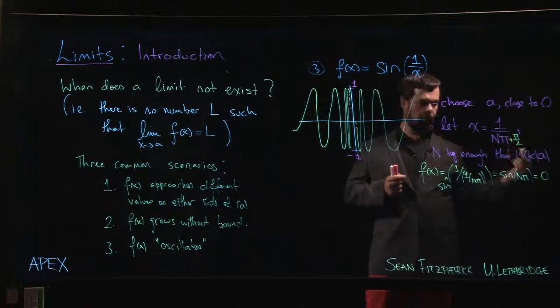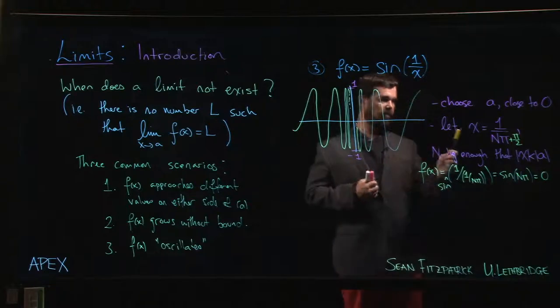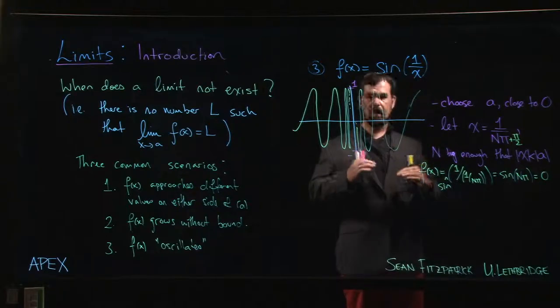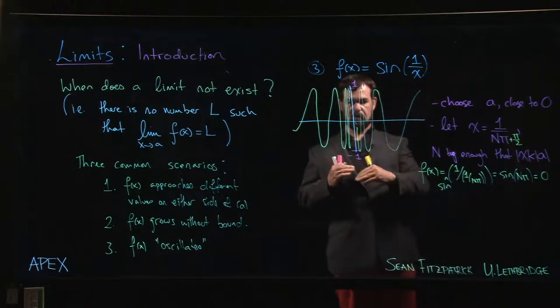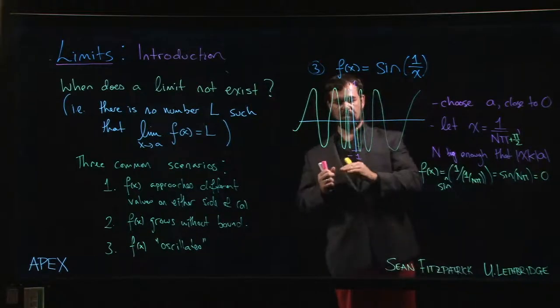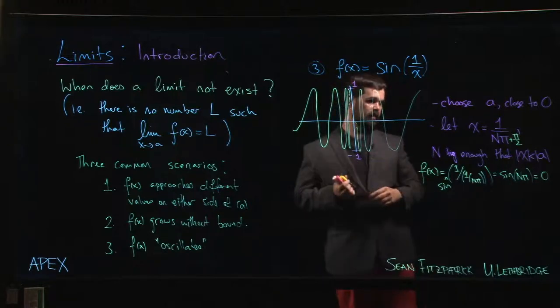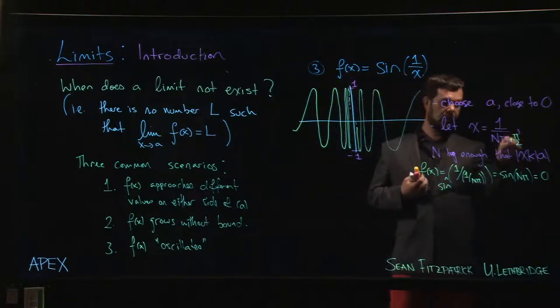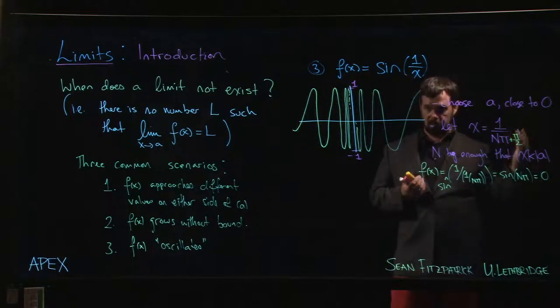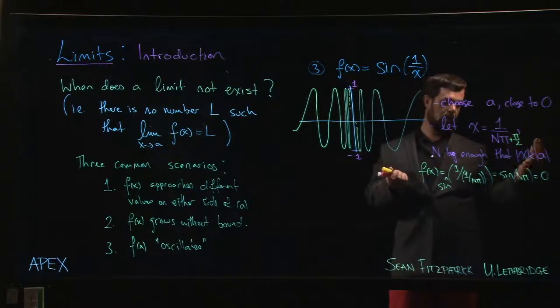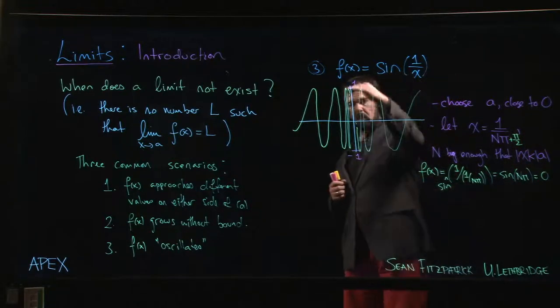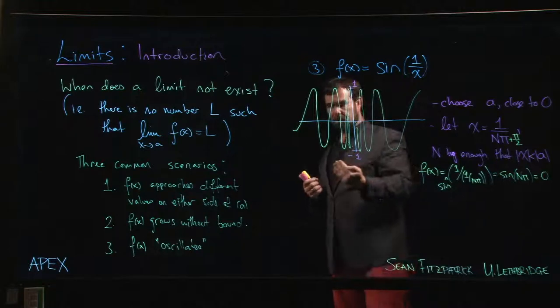It doesn't matter what integer value you plug for n, this is always going to be the case. The bigger n gets, the smaller x gets. This shows you that no matter how close you get to zero, you can always find values that give you minus one and one. You could also add in any other value you want between zero and two pi, and you'll cover all the other y values between minus one and one.